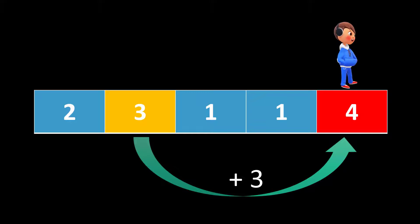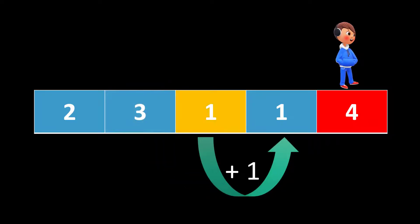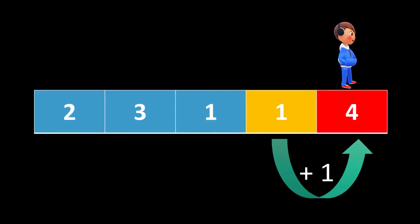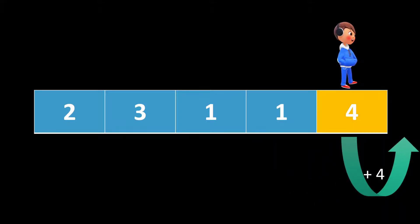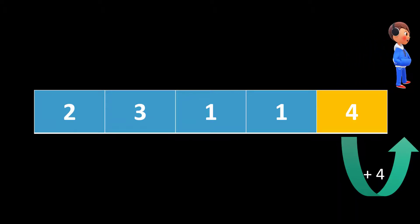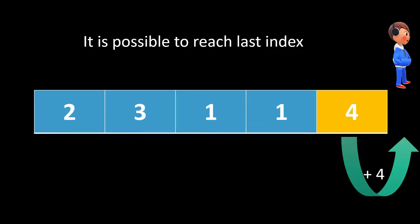Just to make the approach more clear, we will iterate through every index. At index two, the value is one, and index two plus one is still less than the maximum we've already achieved, so there is no point using that jump. We move ahead, the same condition applies again. At the last index, the value is four and we can make that jump since the maximum and current index are the same. We land outside the array, but that only signifies that we can reach the last index, so we return true.